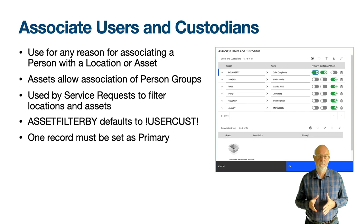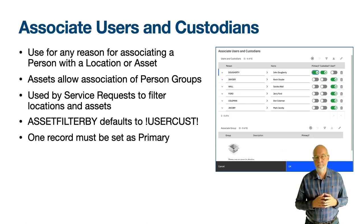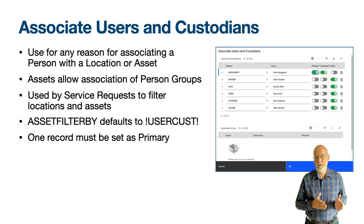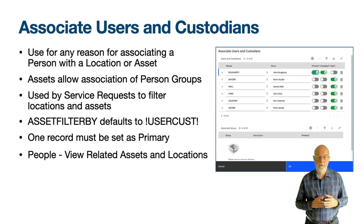For assets there is the ability to associate multiple person groups — a team — for which one person group must be designated as primary. In the people application you can use the view related assets and locations action to view, but not modify, the associations with a location or asset for which the person is a user or custodian.